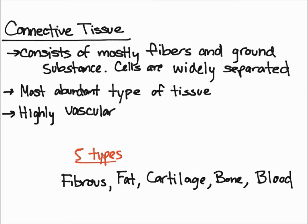Connective tissue consists of mostly fibers and ground substance, which means there are not too many cells — the cells in connective tissue are widely separated. Out of the four primary tissues, it's the most abundant type. It also tends to be highly vascular, which means it contains a lot of blood vessels.